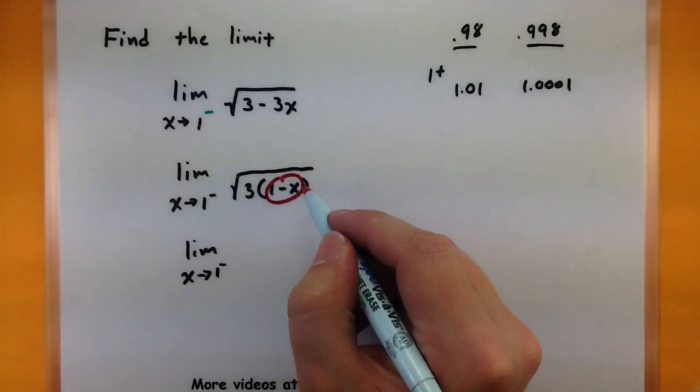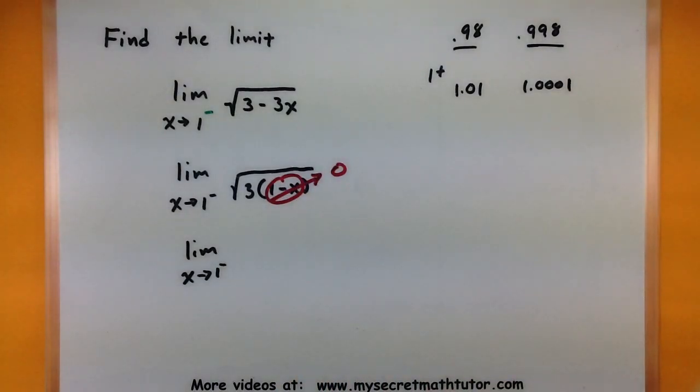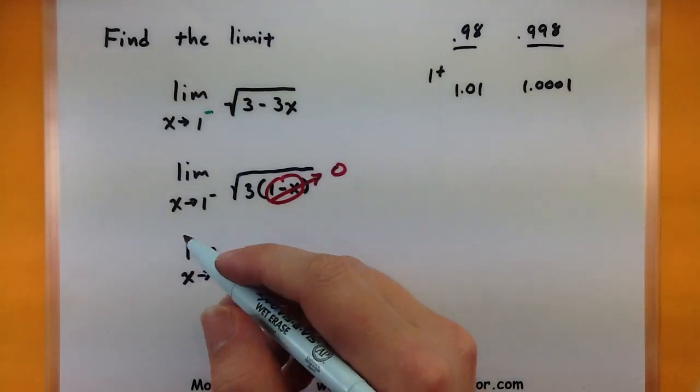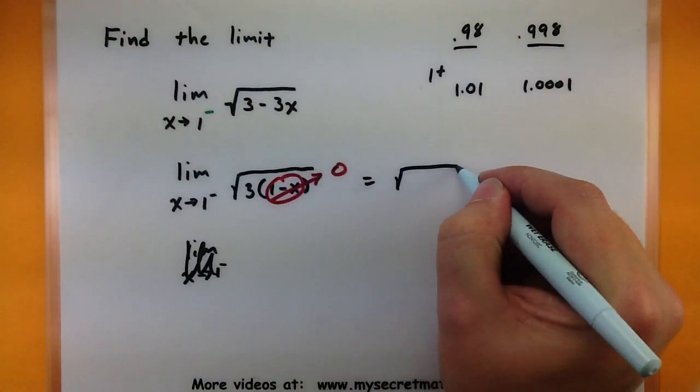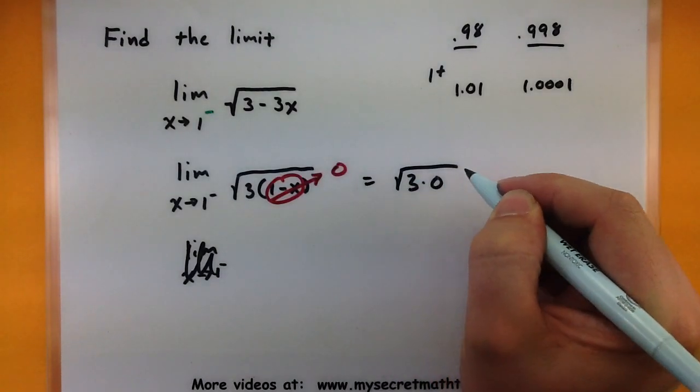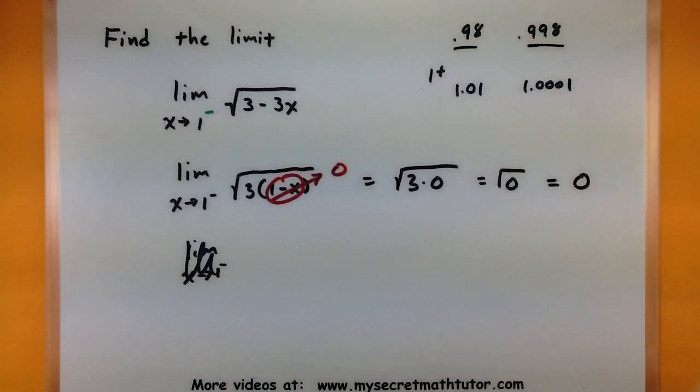So all of this wants to go to 0. Now if it does, we can just go ahead and finish computing this. Be the square root of 3 times 0, or the square root of 0, or simply 0. You can see once you get a handle on this one, substitution also works out pretty good. But the reason why there's a one-sided limit is because you can't approach it from the right side. Let's look at one more.